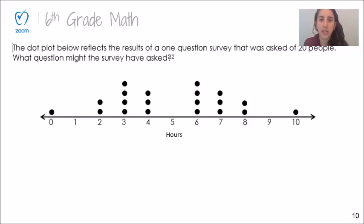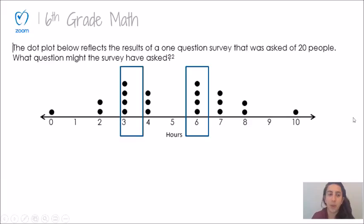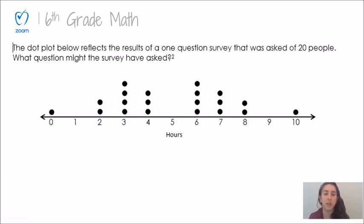Now that we've had an opportunity to sort questions into statistical and non-statistical, and we've had an opportunity to look at what kind of questions lead to numerical data and what kind of questions lead to categorical data, we're going to take a stab at a little bit of a more challenging problem here. This question says, the dot plot below reflects the results of a one question survey that was asked of 20 people. What question might the survey have asked? Dot plots should look familiar to you from 5th grade, but a quick refresher: each dot represents one person, so there's a total of 20 dots. And the frequency of dots over a number represents how many people chose that response.